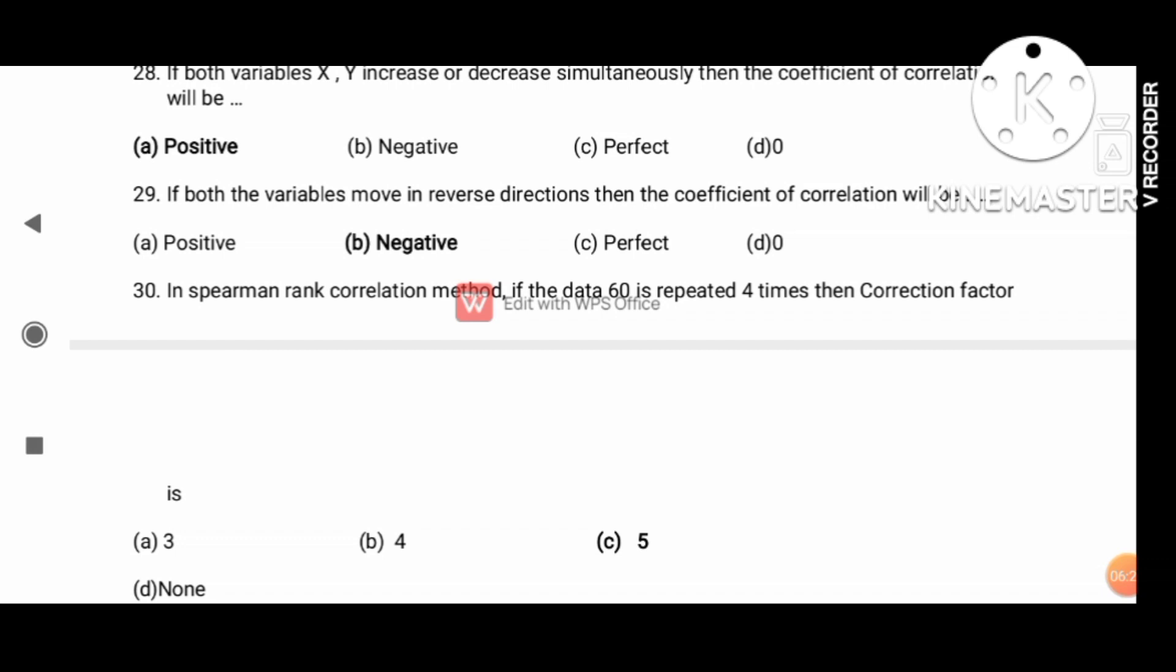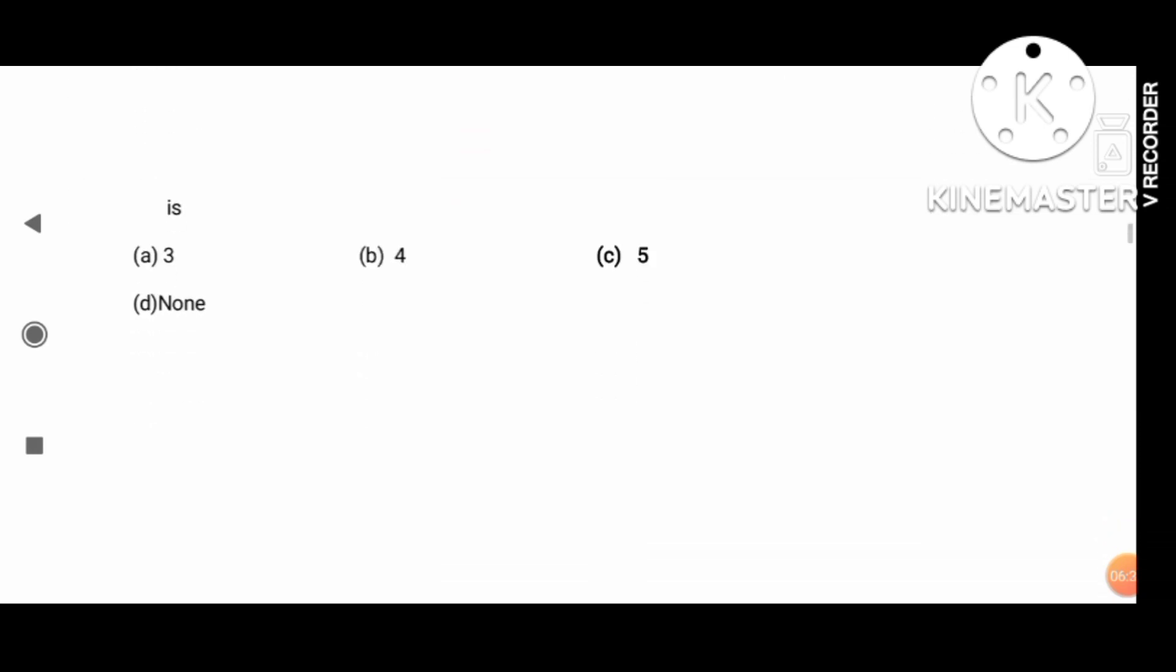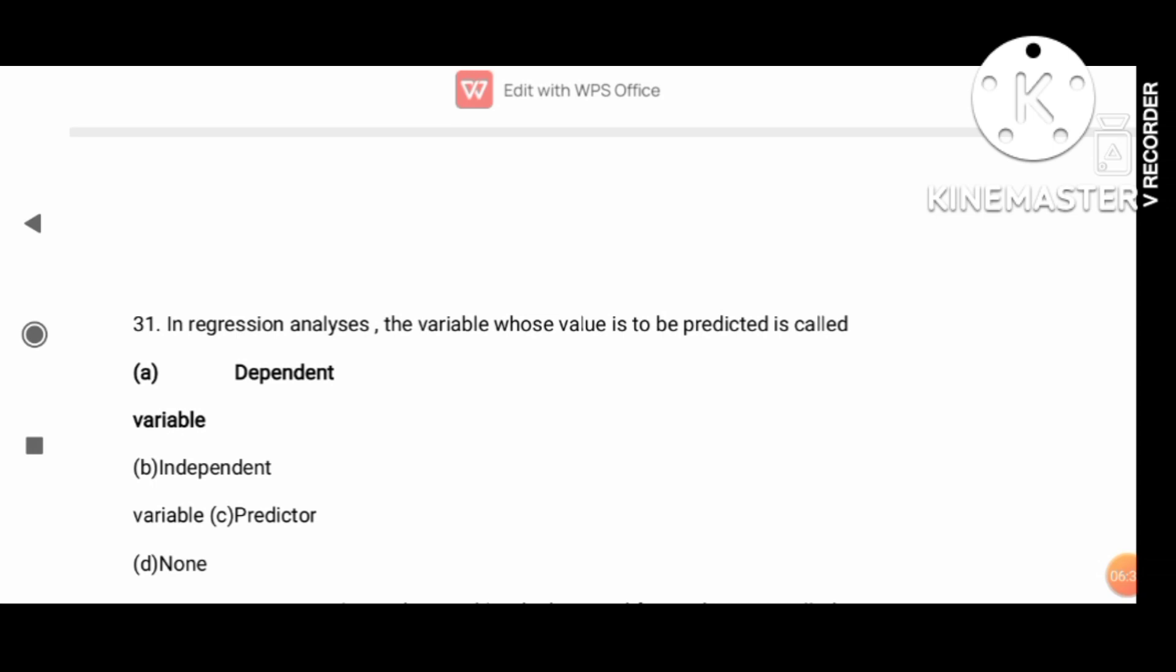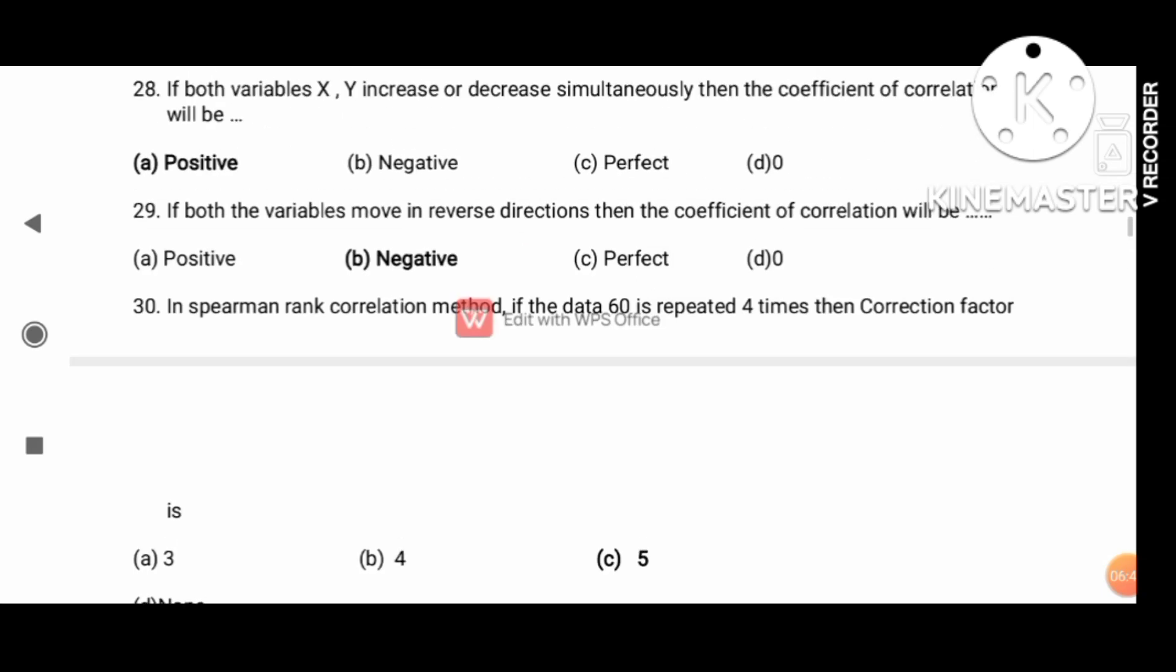For the rank correlation method, if the data value 60 is repeated four times, the correlation factor is 5. With 30 questions out of 75 questions, it will have many important questions.